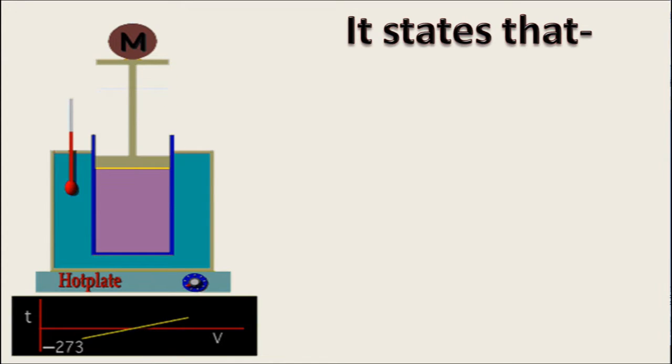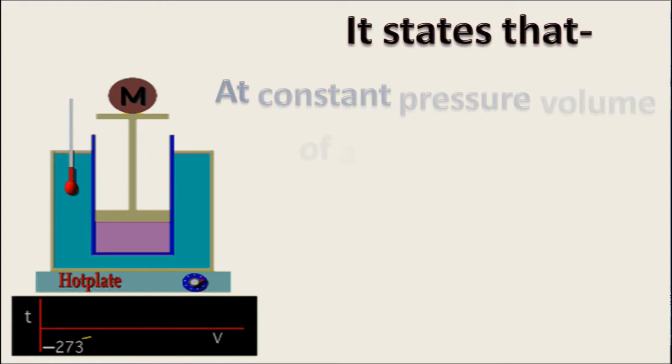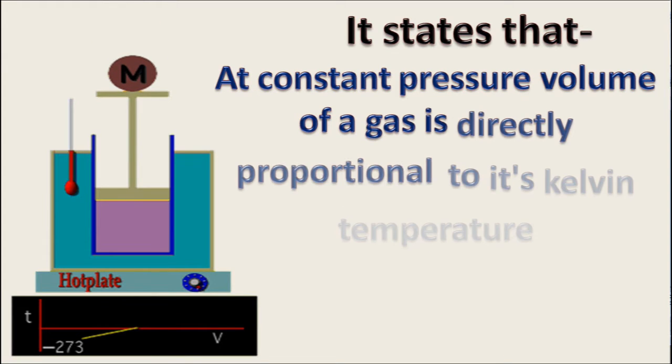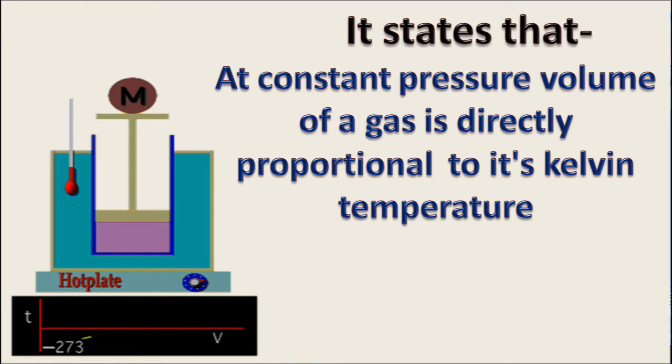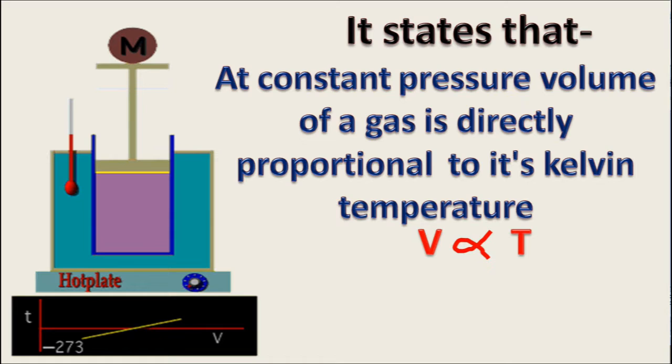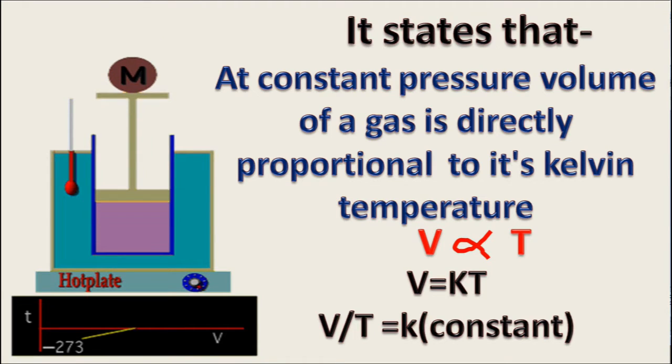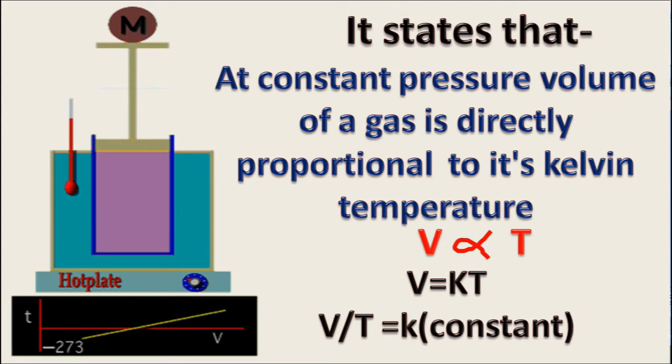It states that at constant pressure, the volume of a gas is directly proportional to its Kelvin temperature. V is proportional to T, or V equals KT, where K is constant, or V by T equals K.